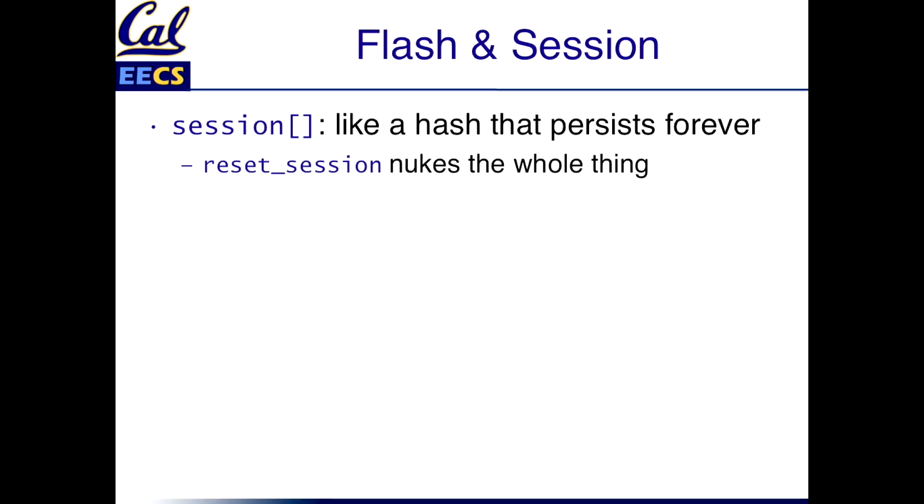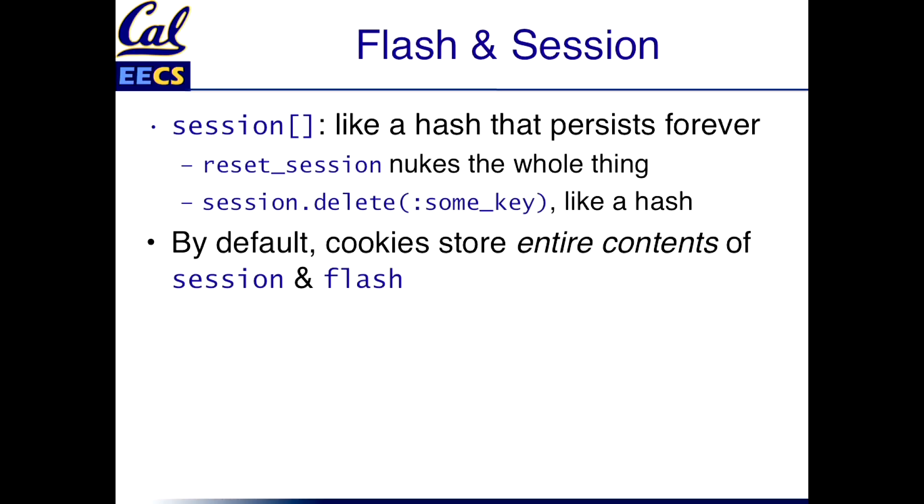The flash is really a special case of a more general mechanism — the session mechanism. Think of it as a hash that persists more or less forever. If I put something in the session for this user, I can expect to get it out during the entire time they're continuously interacting with my app. I can reset_session to nuke the whole thing, or delete specific things. By default, cookies store the entire contents of the session, and there are limits on how large a cookie is allowed to be. So if the session is just like any other Ruby hash and you can put things of arbitrary size in there, you can see where this is an accident about to happen — another example of where the abstraction leaks.